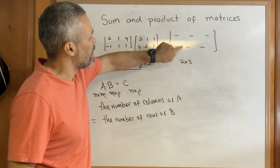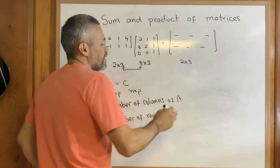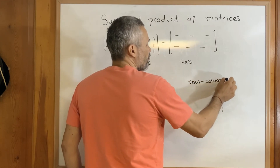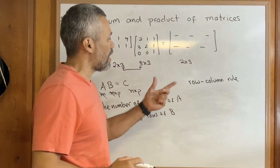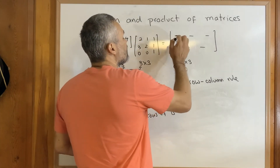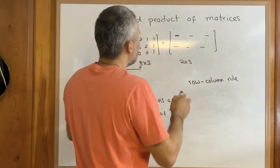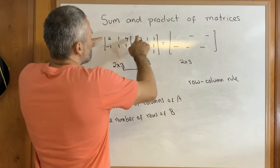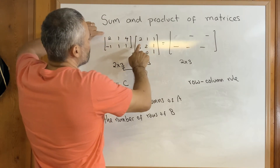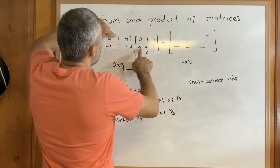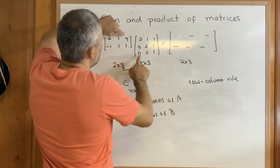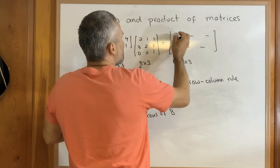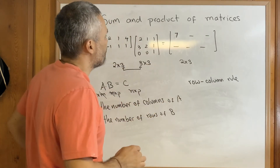There are two ways to find these six numbers. The first way is by doing a row-column product sum. For example, to find entry (1,1), we use the first row of A and the first column of B and do a product sum: 2 times 2 is 4, plus 1 times 3 is 3, plus 4 times 0 is 0. So 4 plus 3 plus 0 equals 7.